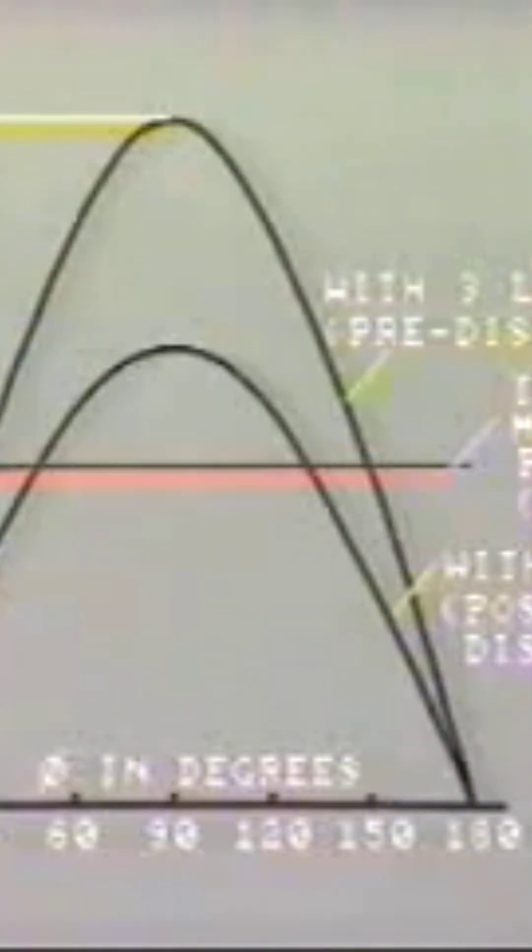With three lines in service and a total load transfer of 1,500 megawatts, the load angle here is about 30 degrees.